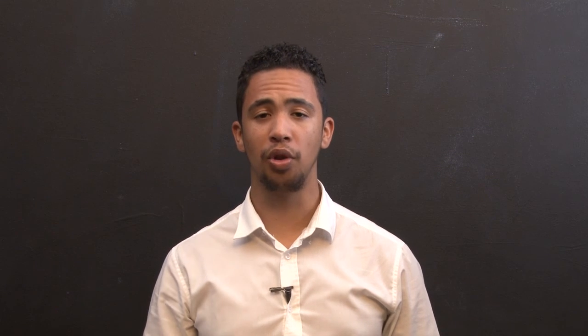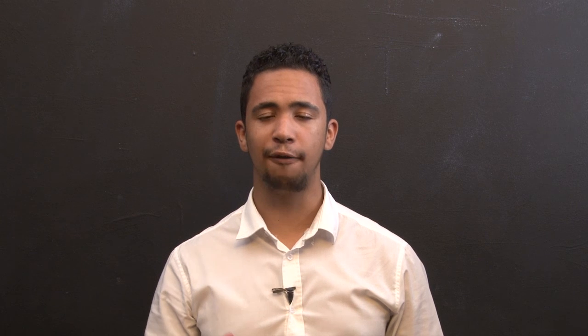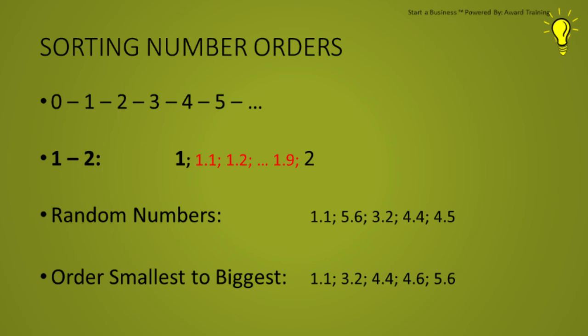Do you agree that 1 is smaller than 3, 3 is smaller than 4, and 4 is smaller than 5? So if we had to reorder these numbers from the smallest to the largest, they would be as follows: 1.1, 3.2, 4.4, 4.6, and 5.6.